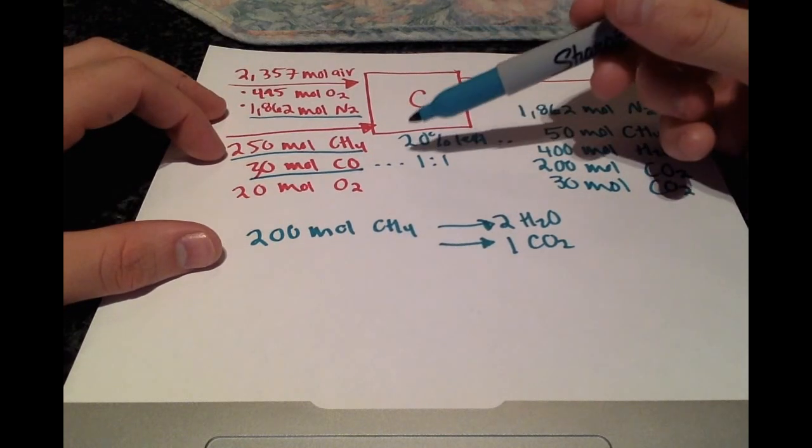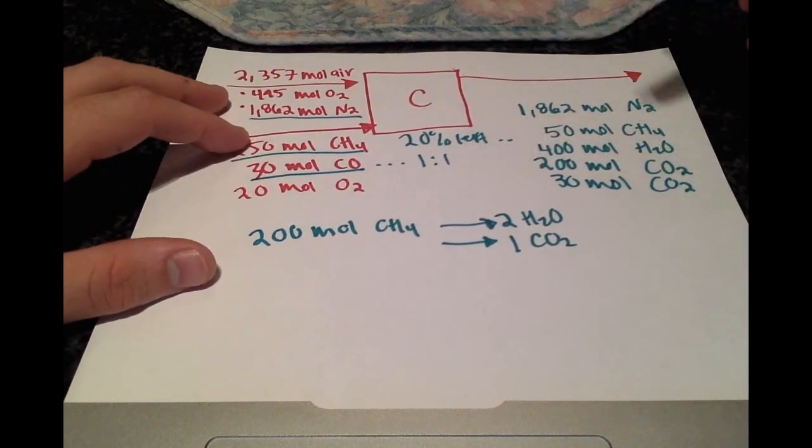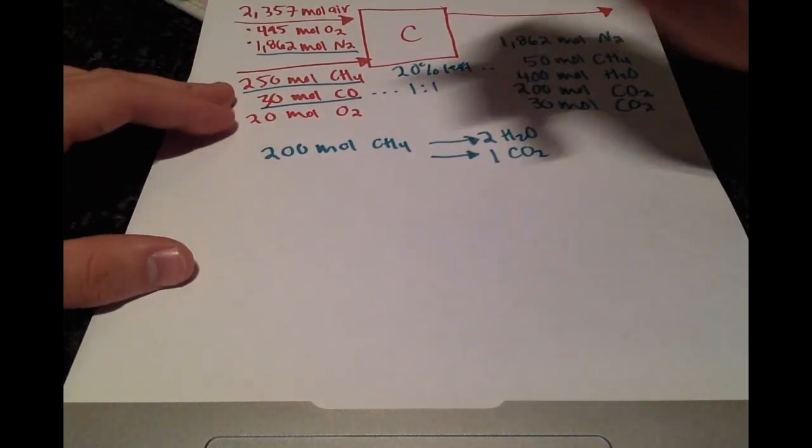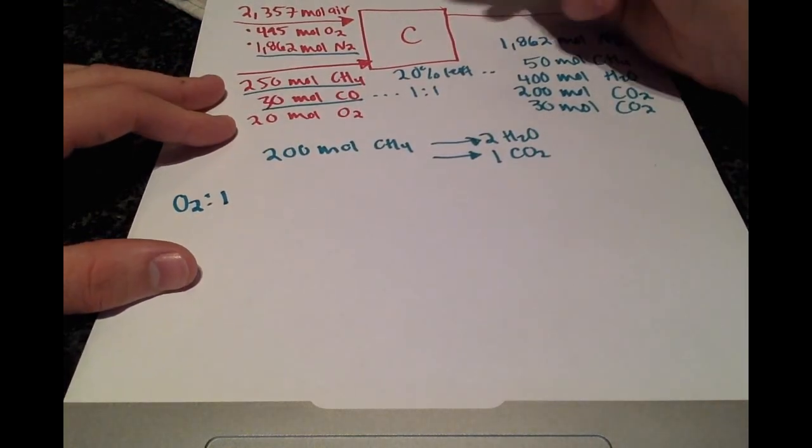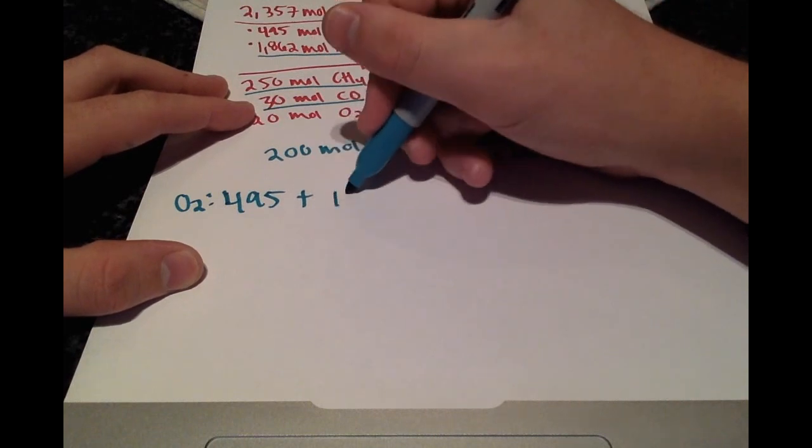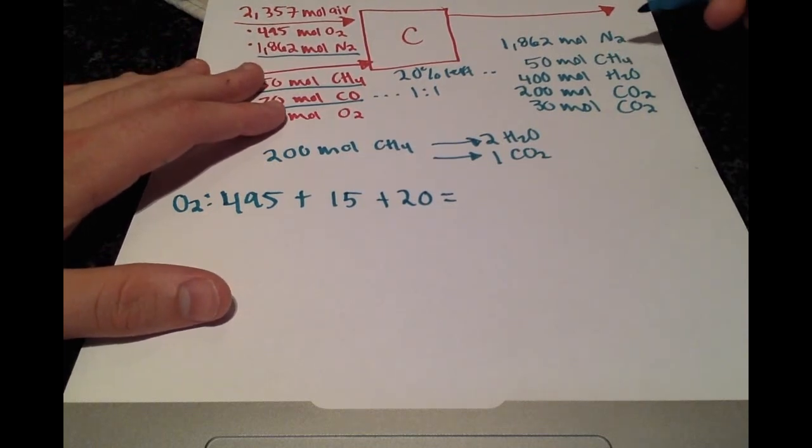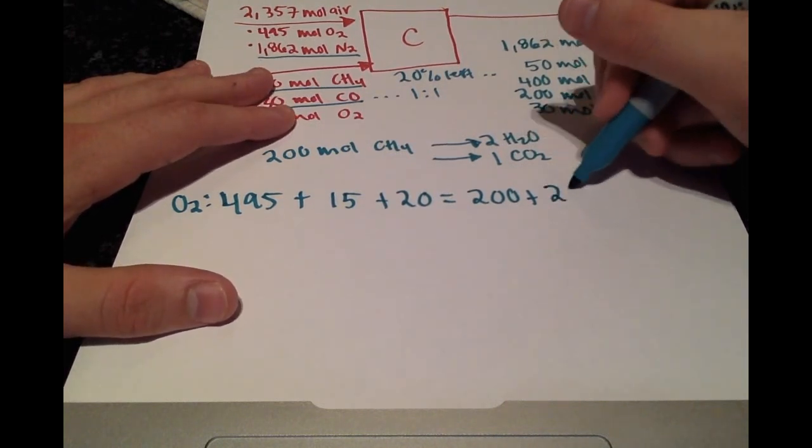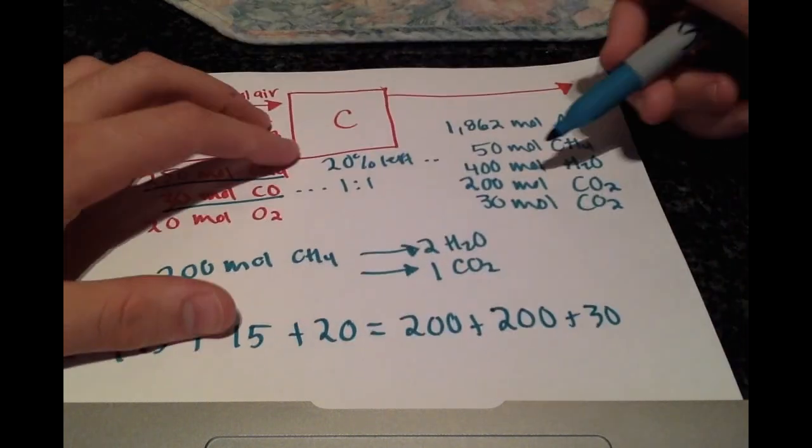Now what's left is the oxygen. There's two ways to do that: you can either do an oxygen balance or you can look at what reacted and what would be left. I would like to do an oxygen balance. Coming in we have the 495 plus half of 30 is 15 plus 20 and that's going to be equal to coming out half of 400 is 200 plus 200 plus the 30.